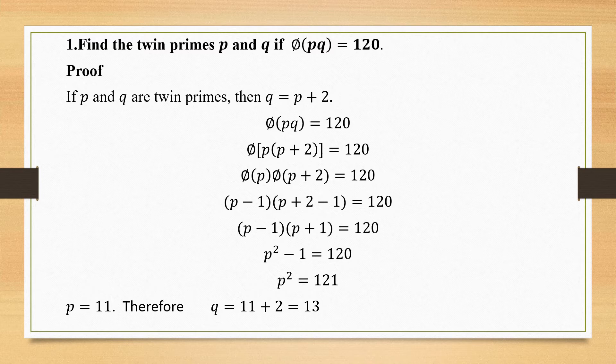Using the identity (A - B)(A + B) = A² - B², we get (P - 1)(P + 1) = P² - 1 = 120. Therefore P² = 121, and taking only positive integers, P = 11. Therefore Q = P + 2 = 13. Hence the values of P and Q are found using the twin prime definitions.